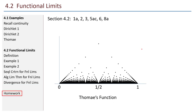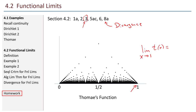For homework: 4.2 problems 1a, 2, 3, 5ac, 6, and 8a. It looks like a lot but they're not too bad. Problem 8a uses the divergence criterion we just talked about. The trickiest but also most interesting one is problem 3, which involves Thomae's function. The limit as x approaches 1 of Thomae's function equals 0 — you'll be asked to do examples that confirm that and then to actually prove it using the definition of the limit. It makes you appreciate the weirdness of Thomae's function. Good luck.